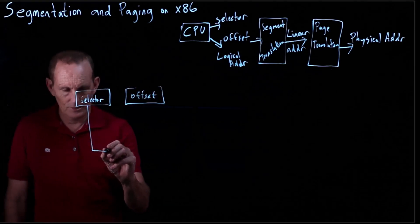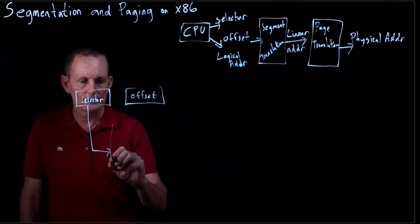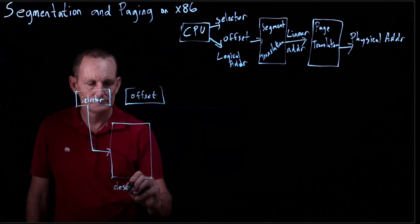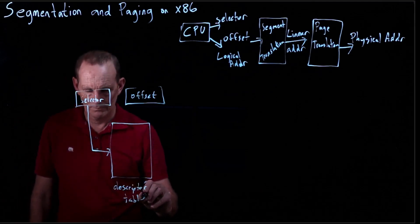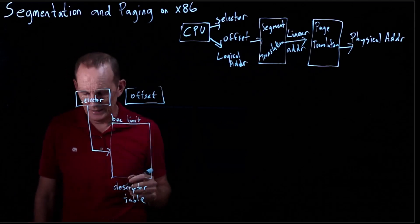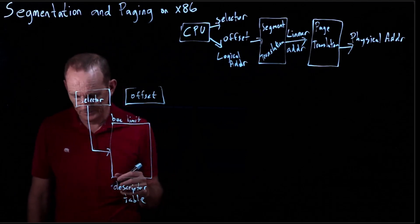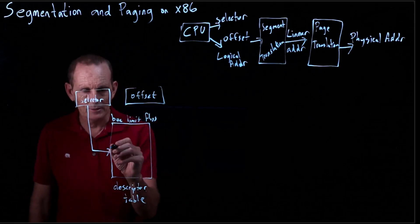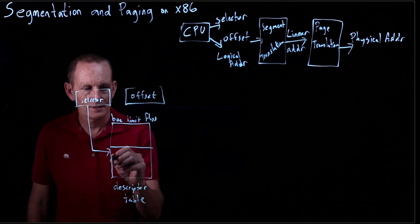The selector is used to go into the descriptor table, and that has base and limit registers along with some flags. And so that then will give us a base.